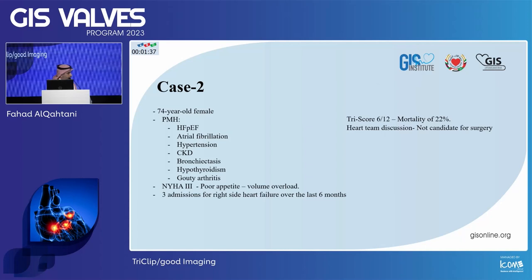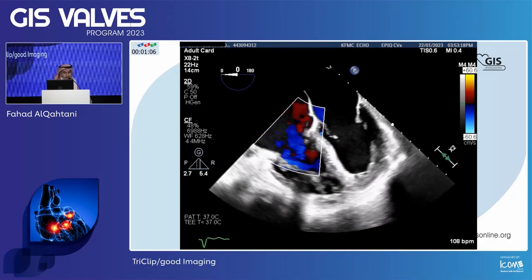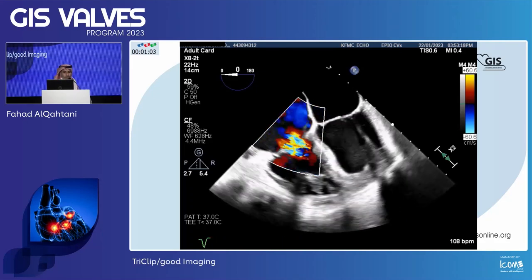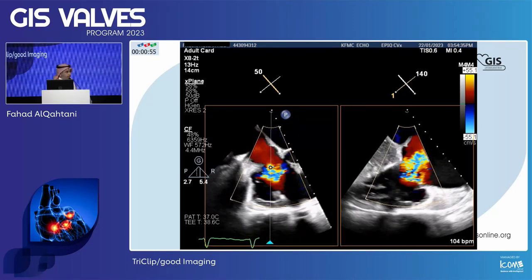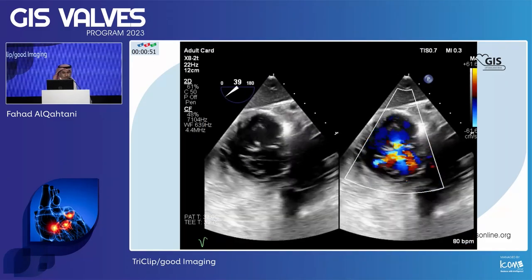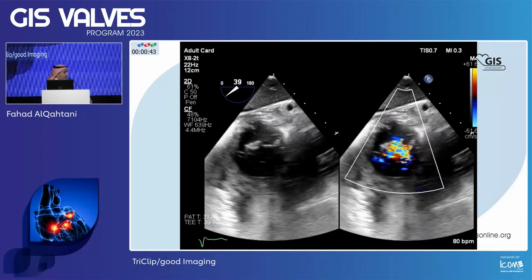The second case: 74-year-old female with heart failure with preserved ejection fraction, AFib, hypertension, CKD, bronchiectasis, hypothyroidism, and gout/arthritis. She presented with NYHA class 3, poor activity tolerance, volume overload, and three admissions for right-sided heart failure. TRI-score of 6 with in-hospital predicted mortality of 22%. Heart team discussion: not a candidate for surgery, so we moved forward with transcatheter approach. Echo showed a wide jet in the four-chamber view, and in the RV inflow-outflow the jet is coming from the anterior, posterior, and central regions — from everywhere.